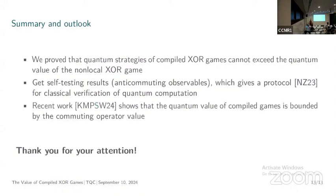Q: In the regular setting, self-testing results are robust with order root epsilon robustness. Do you get similar robustness here? A: In the crypto setting you always have a negligible function, so there's no exact self-testing — everything is robust. You can take epsilon-close-to-perfect strategies and get order root epsilon plus some negligible function.